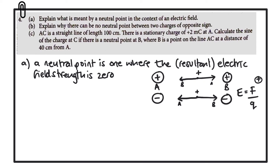Now consider the case where we have one positive charge and one negative charge — say A is positive and B is negative. If we place a positive test charge at a point in the middle: A is positive so they repel, giving a force to the right; B is negative so it attracts the positive test charge, also pulling it to the right. Because we have opposite charges, the forces always act in the same direction and can never cancel out, so there can be no neutral point between opposite charges.